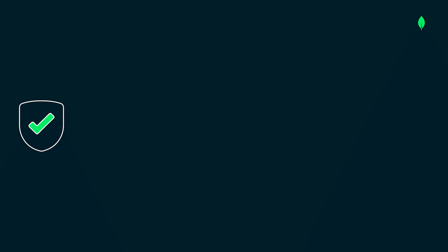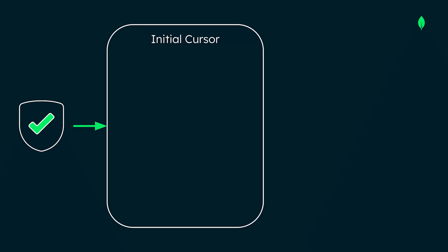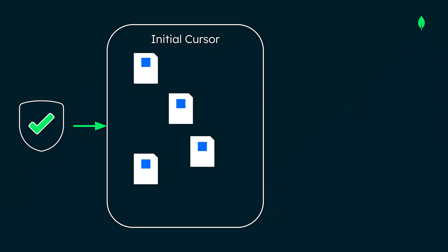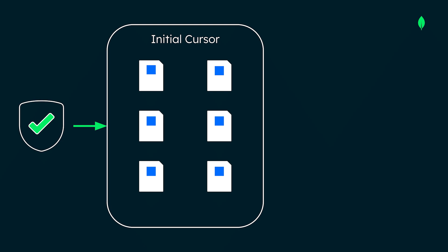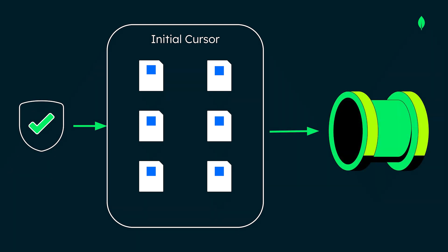After an aggregation pipeline is initiated and optimized by MongoDB's query optimizer, an initial cursor is automatically created to handle the flow of documents through the pipeline. The execution engine begins retrieving documents from the collection and adding them to the cursor. If an index is available, the execution engine will use it to increase efficiency. Then the cursor sends the documents to the pipeline.